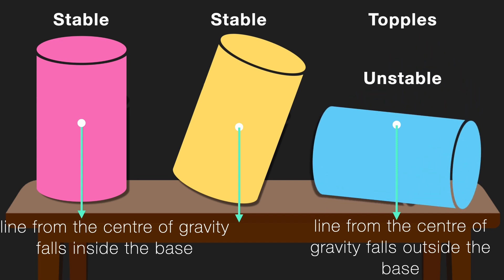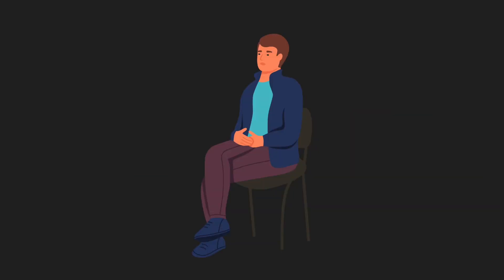So what is the conclusion here? Stability depends on where the center of gravity is. If the center of gravity falls within the base of the object, like in the first two cylinders, the object is stable. If the center of gravity falls outside the base, as in the third case, it just topples.